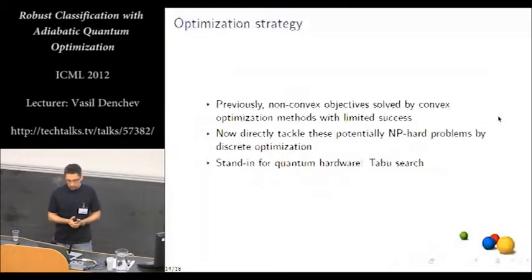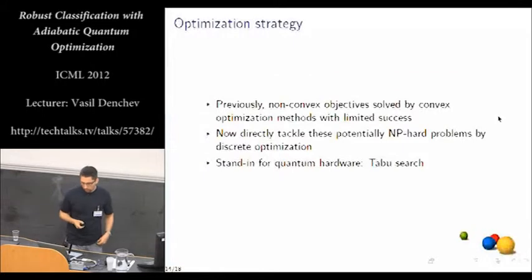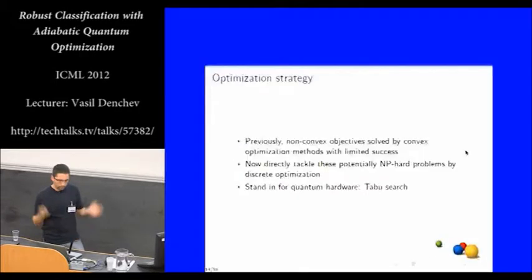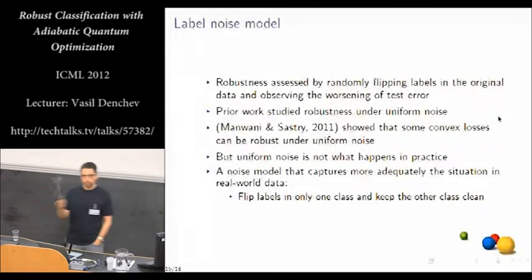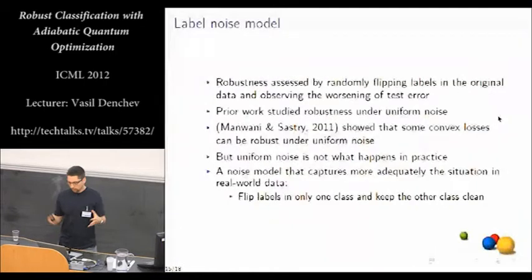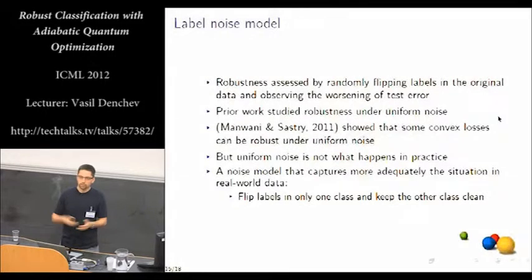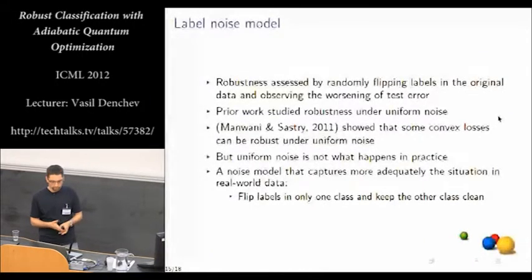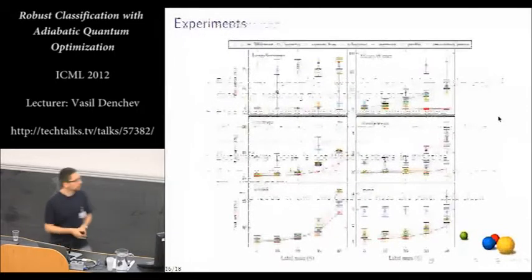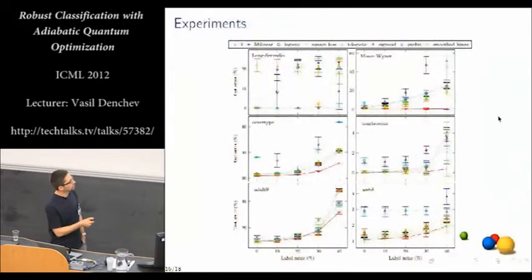So the optimization strategy that we use here is just we use taboo search, a classical heuristic as a stand-in for quantum hardware, because we don't have the large quantum hardware that we would need to use for large-scale problems. And the label noise model that we use is a little different also from previous work. So previous work used uniform label noise injected in the original data. And then they were observing how the test error increases with increasing label noise. Here we used asymmetric noise inserted only in one of the classes of the data.